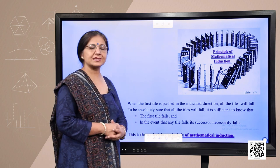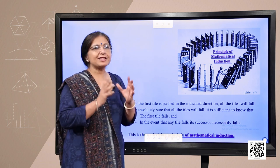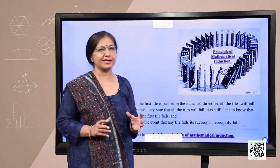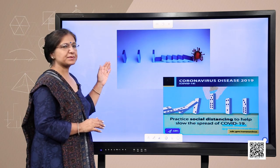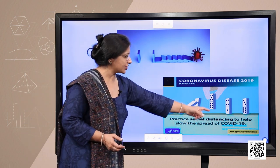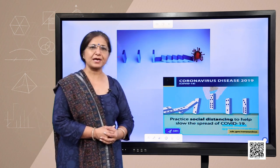This is the underlying principle of mathematical induction beautifully explained with the domino effect. In the present scenario of COVID-19, we can explain social distancing with these pictures: the coronavirus pushes one tile (attacks one person) and it spreads. But if we create sufficient distance between the tiles so that if one falls it does not affect the other, the tiles keep standing. By following the principle of social distancing, we can help stop or slow down the spread of coronavirus.